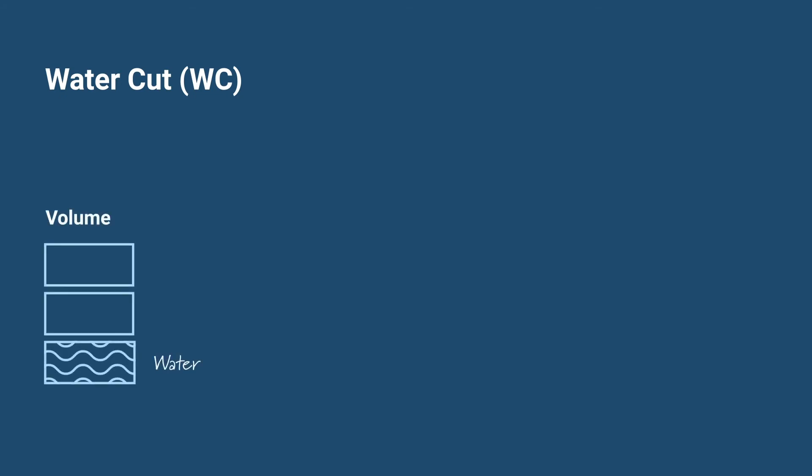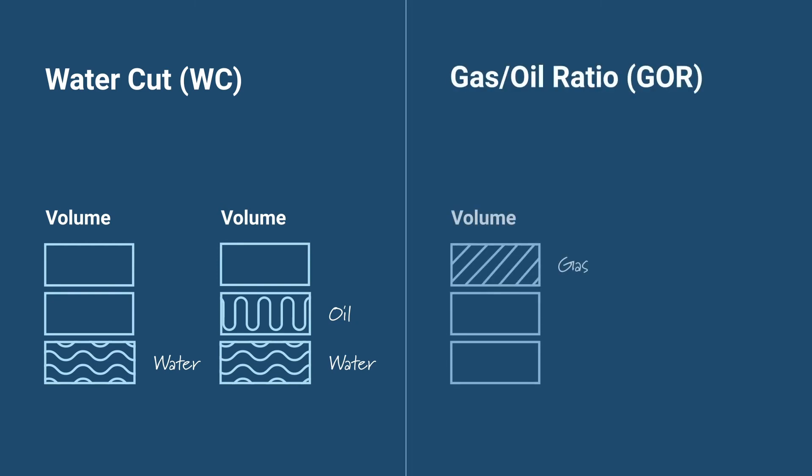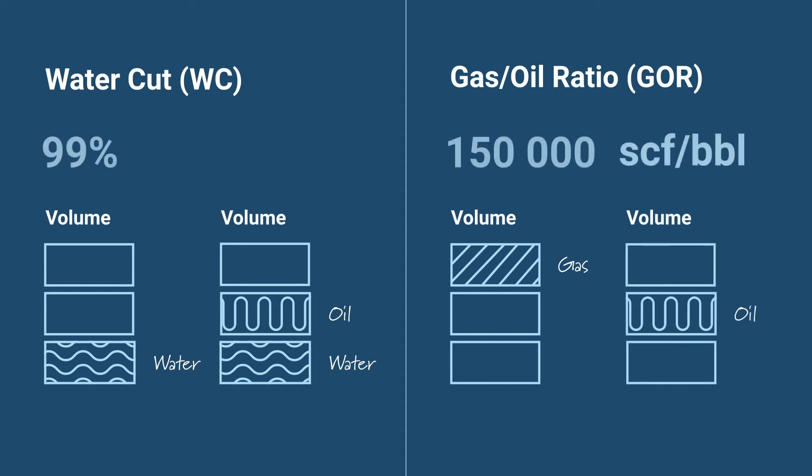The term water cuts is used to describe the ratio of water compared to the volume of total liquids produced in the well. The term gas to oil ratio refers to the amount of gas being produced in comparison to oil. Of course, the aim is to produce oil with the lowest possible water cut and GOR values.